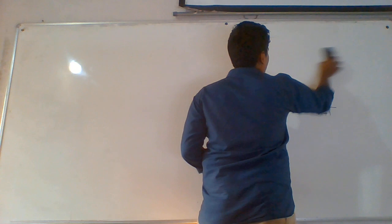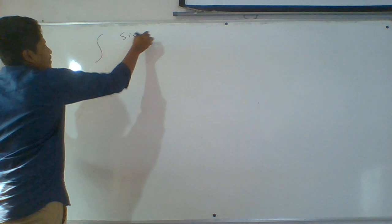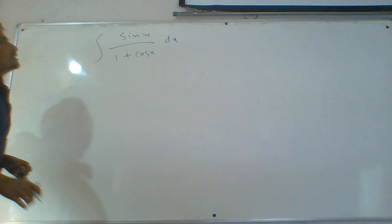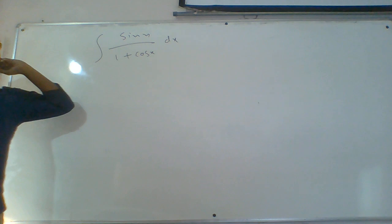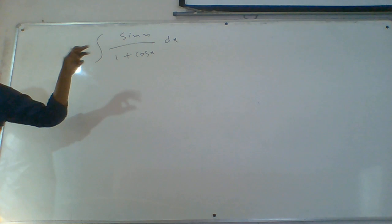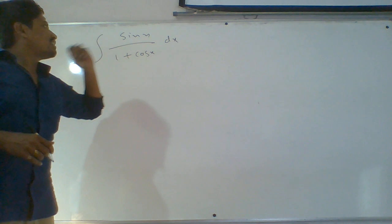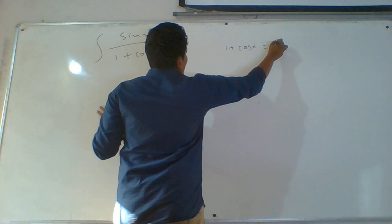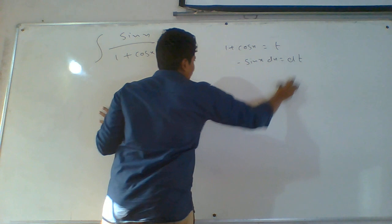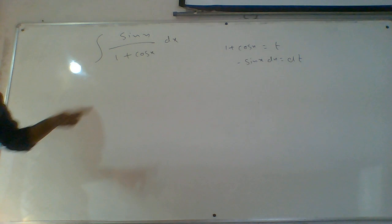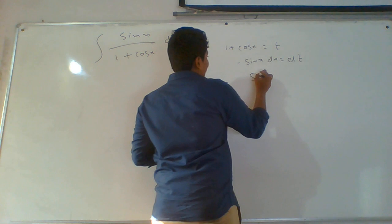Question 30: integral of sin x by (1 plus cos x) dx. If we substitute 1 plus cos x as t, the derivative gives: derivative of 1 is 0, for cos x it is minus sin x dx. So it converts: 1 plus cos x equals t, and minus sin x dx equals dt, meaning sin x dx equals minus dt.